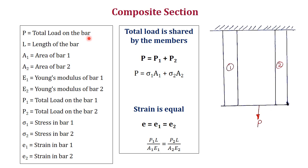In composite sections, the following parameters are used: P represents the total load on the bar, L means length of the bar, A represents the cross-sectional area of the bars, E means Young's modulus of each bar, P also represents the load on respective bars, sigma represents the stress, and small e represents the strain on each bar.